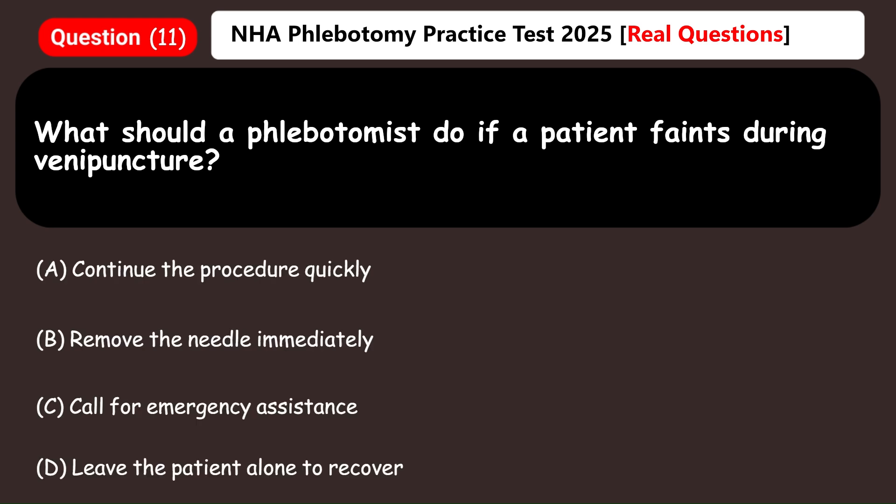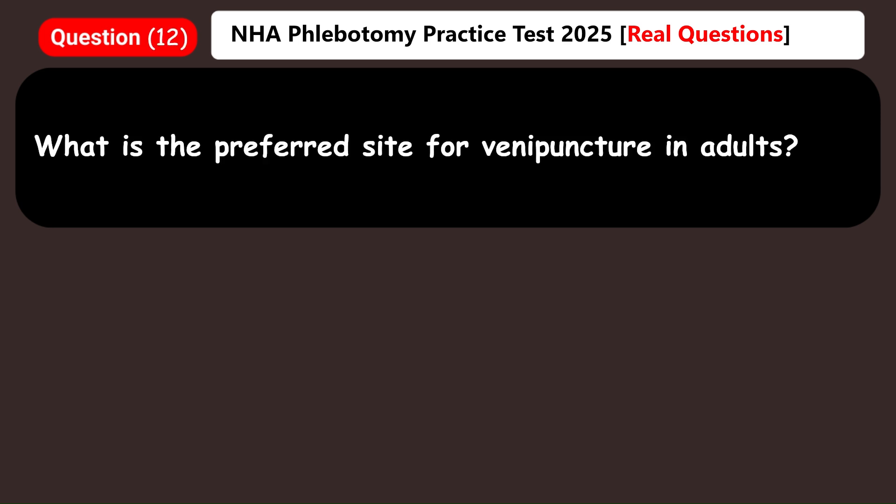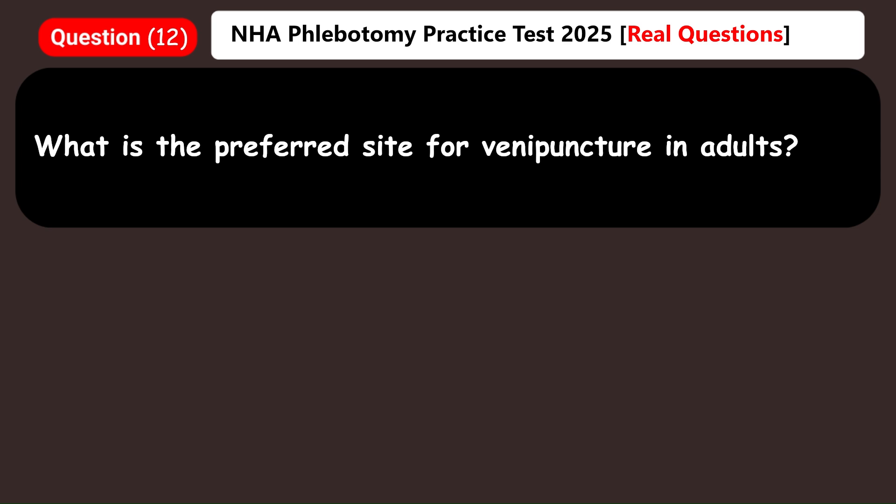What should a phlebotomist do if a patient faints during venipuncture? A) Continue the procedure quickly, B) Remove the needle immediately, C) Call for emergency assistance, D) Leave the patient alone to recover. Answer: B) Remove the needle immediately.